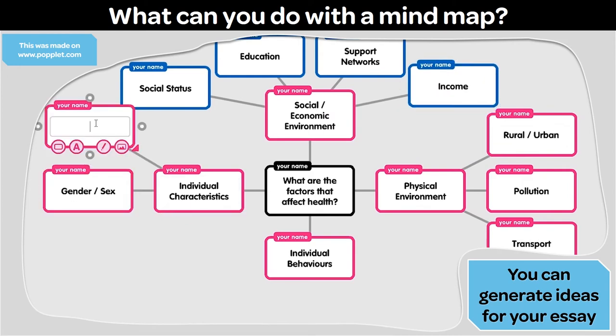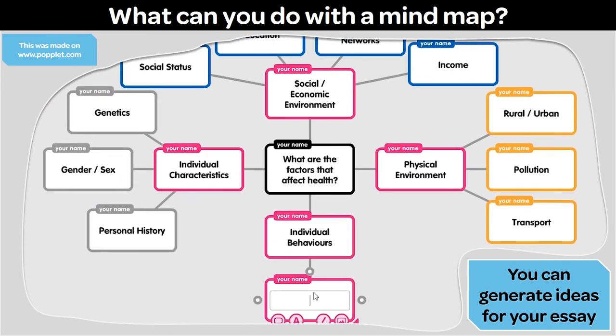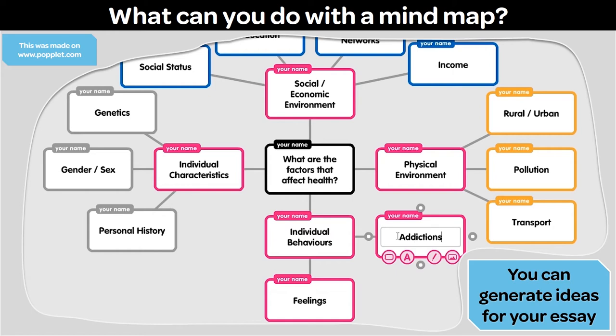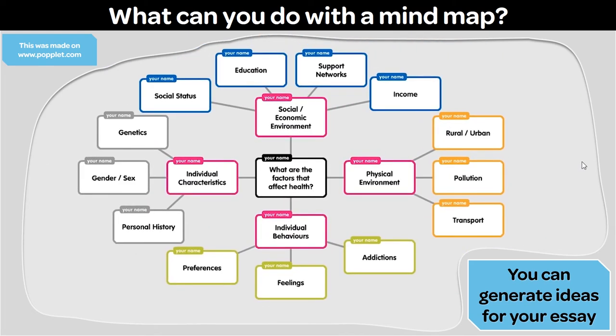Gender or sex. Genetics. And personal history. All coming away from the individual characteristics topic. Feelings. Addiction. Preferences. All coming away from the individual behaviors topic. And let's just zoom out and there we can see the whole of my mind map.